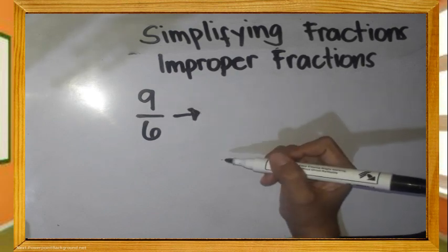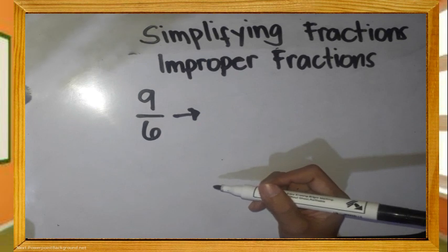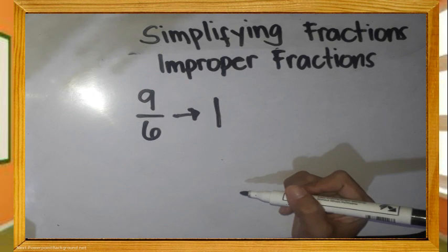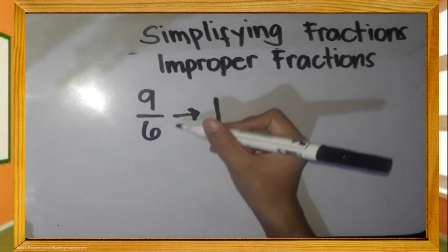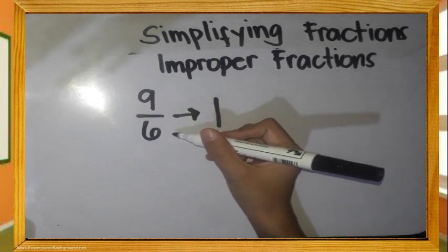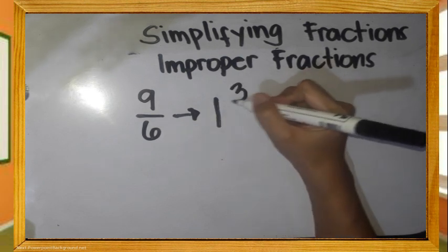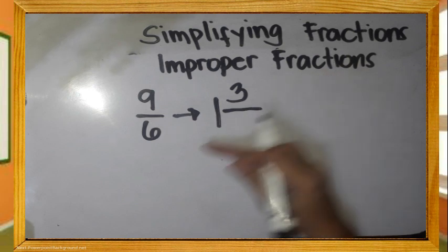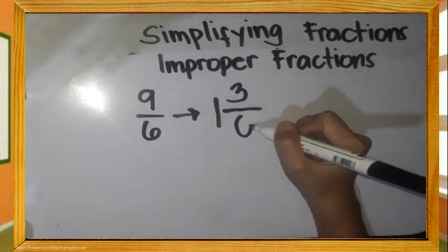I-divide ang 6 meron sa 9. Ang quotient ay 1, at ito ang magiging whole number natin. Kapag na-divide mo ang 9 divided by 6, ang natira ay 3. Ito ang magiging numerator. Kopyahin lang ulit ang ating denominator.